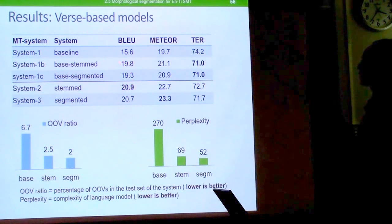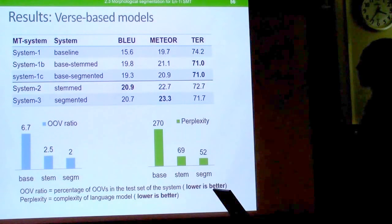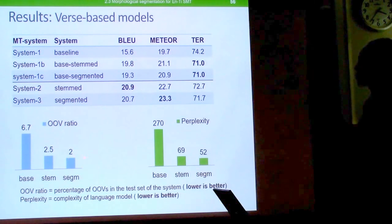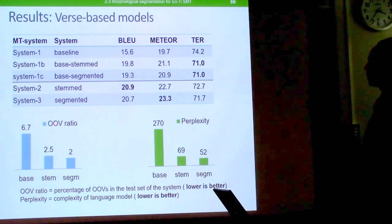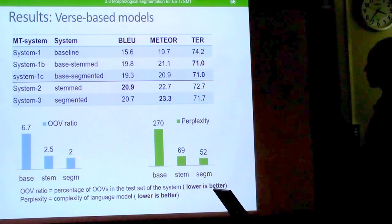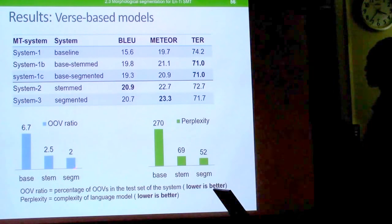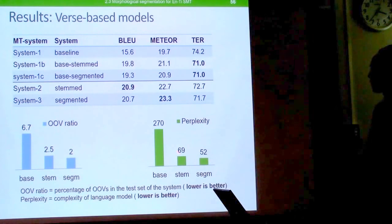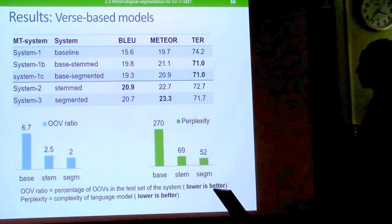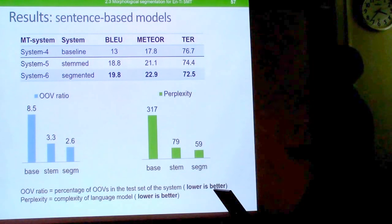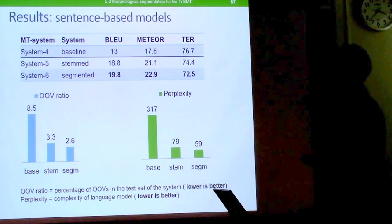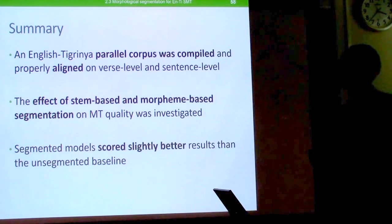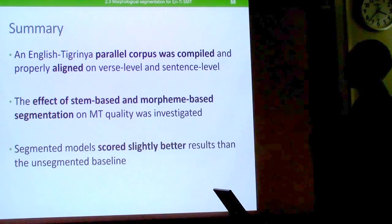Results for the verse-based models show a slight improvement — from 19.8 to 20.9 — indicating that segmentation does improve English-to-Tigrinya translation quality. This is because the out-of-vocabulary ratio was greatly reduced by segmentation, and the perplexity — a measure of language model complexity — was also greatly reduced. This reduction transferred into improved translation quality, and the same trend was observed for sentence-based models.